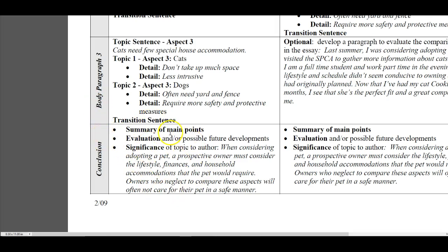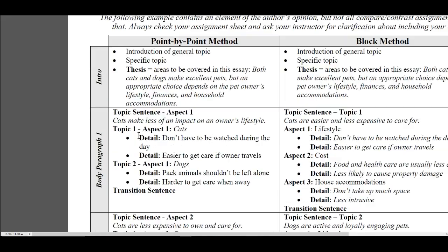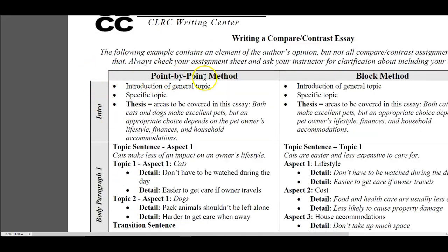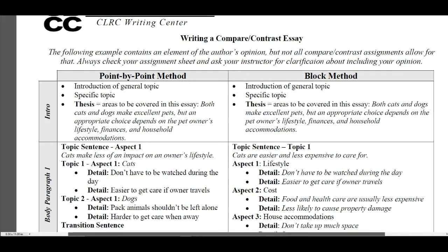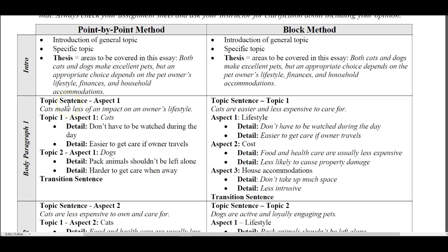Then your conclusion paragraph would be here, so this ended up being four paragraphs. To me, that would be a short essay, and point by point would be better for short essays. If you're going to write something longer, I would go with the block method. To review quickly: in the point by point method, you go by the aspects — aspect one: lifestyle, aspect two: finances, and aspect three: household accommodations.